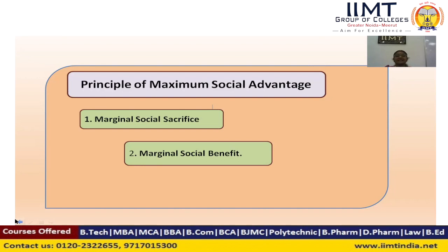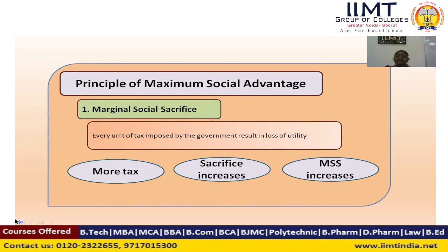The first point is maximum social sacrifice. Whenever the government performs various activities, it should have enough money, and that money comes from tax. Government collects money in the form of tax and utilizes it for performing various activities. Public finance deals with the money of the people. So when tax is imposed, how is it impacting the society? That is what Professor Dalton studied.